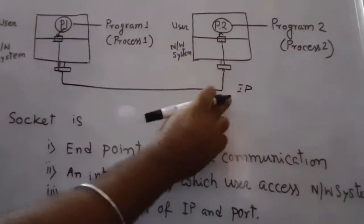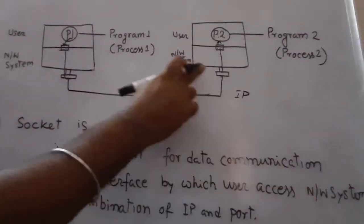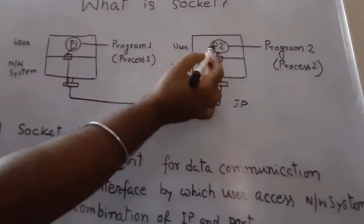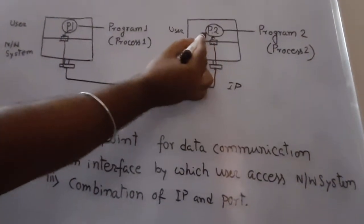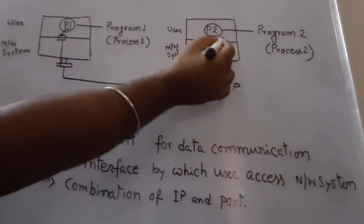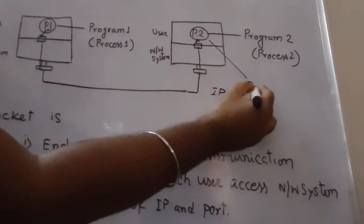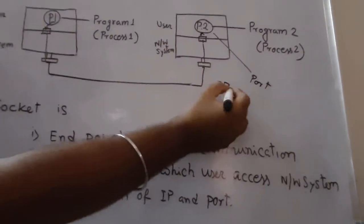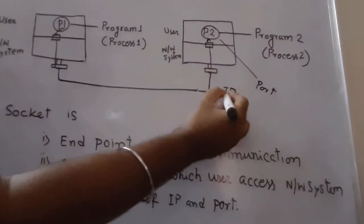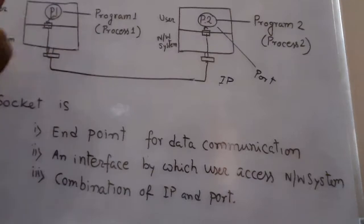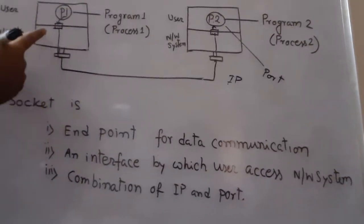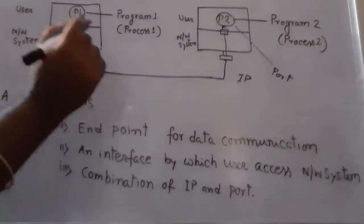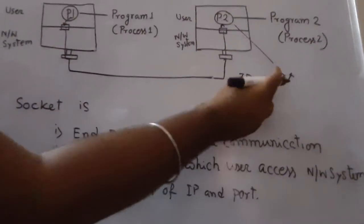To identify a system in a network, we need an IP address. So an IP address is required to identify a system. But to identify a process running on that particular system, we need a port number. So the port is used to identify a process, and the IP address is used to identify a machine.